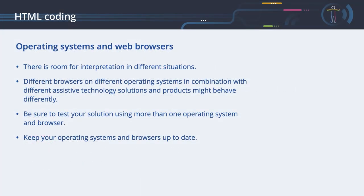Operating systems and web browsers. Although there are standards, there is room for interpretation in different situations. Different browsers on different operating systems, in combination with different assistive technology solutions, might behave differently. Be sure to test your solution using more than one operating system and browser. There are free screen readers available to test your code in different environments. Do not forget to test with keyboard-based navigation, and keep your operating systems and browsers up to date.